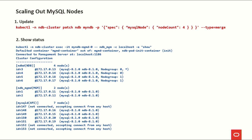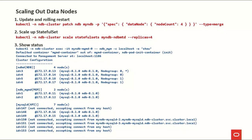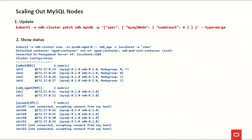Scaling out MySQL nodes is simpler than scaling data nodes. For data nodes we needed two steps — kubectl patch plus scaling the stateful set. For MySQL nodes, only one step is needed: just patch the NDB cluster definition to change node count from 2 to 4. Two new MySQLD instances will appear, occupying spare API slots.